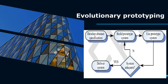In evolutionary prototyping, an initial prototype is produced and refined through a number of stages to the final system, to deliver a working system to end users. The development starts with those requirements which are best understood. Evolutionary prototyping should be used for systems where the specification cannot be developed in advance — for example, in AI systems or user interface systems. It is based on techniques which allow rapid system iterations.